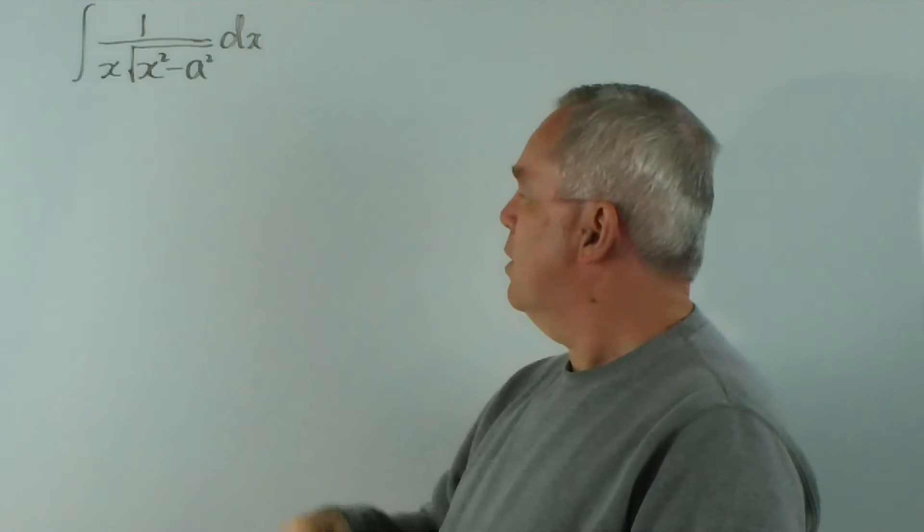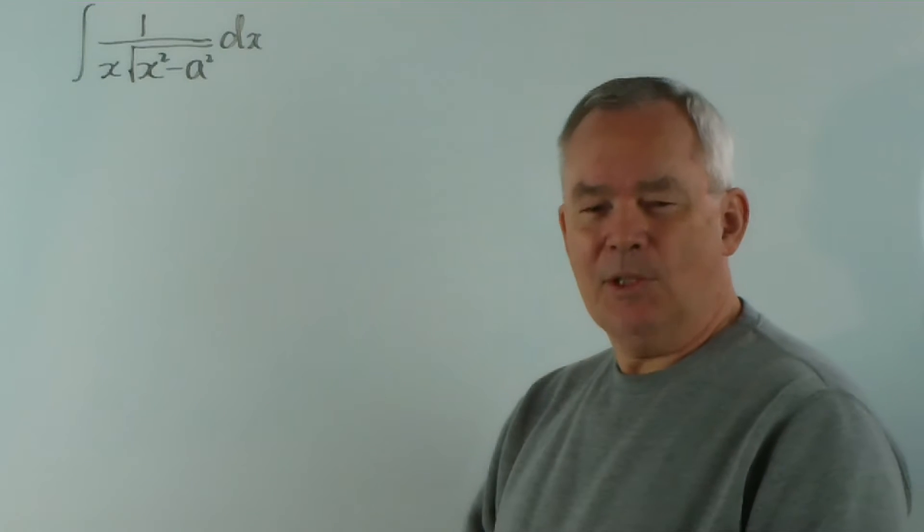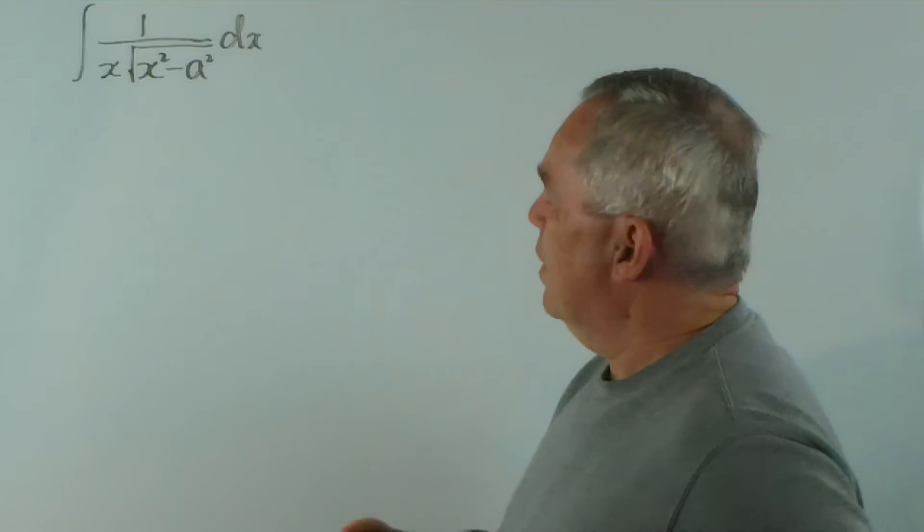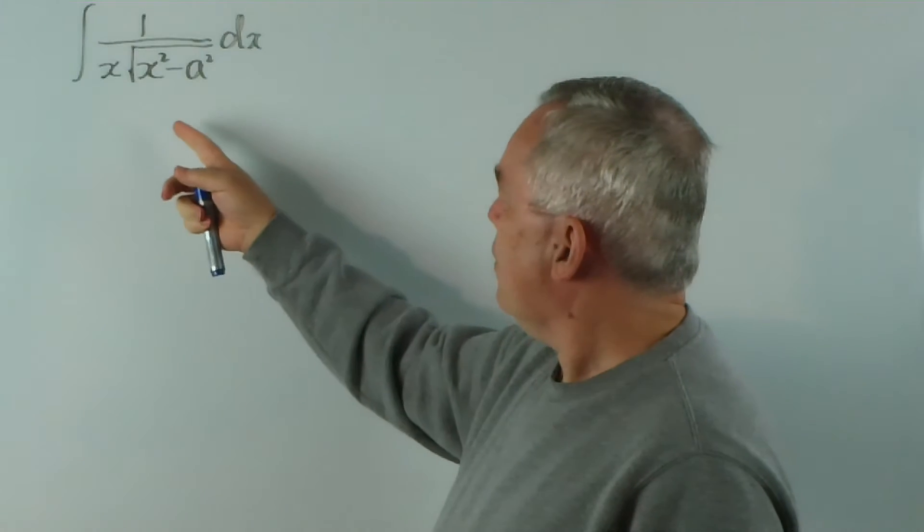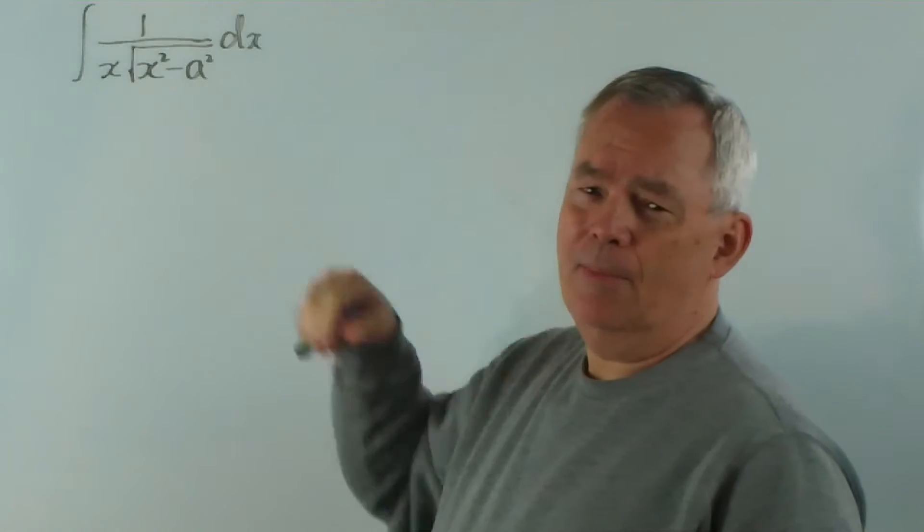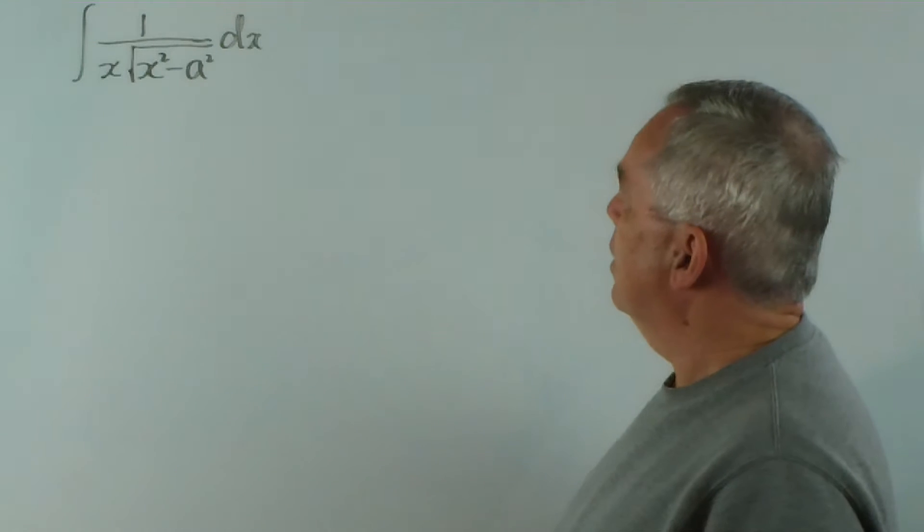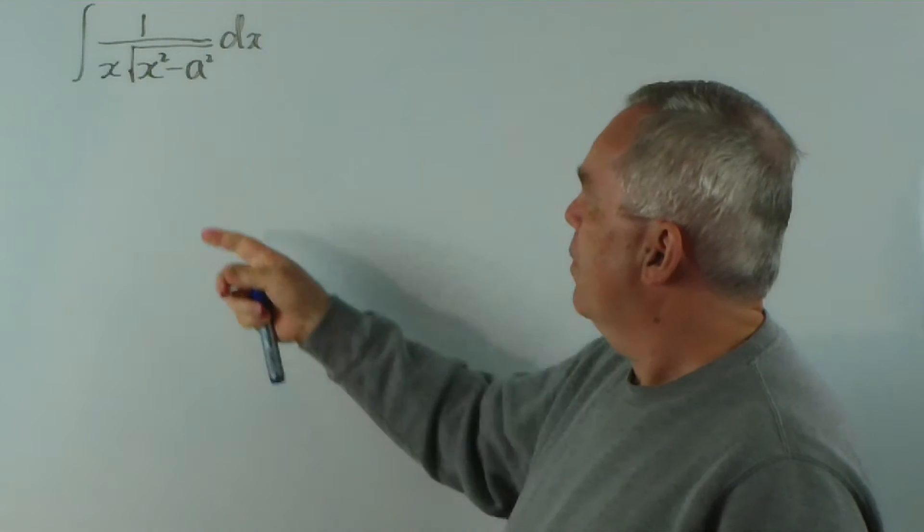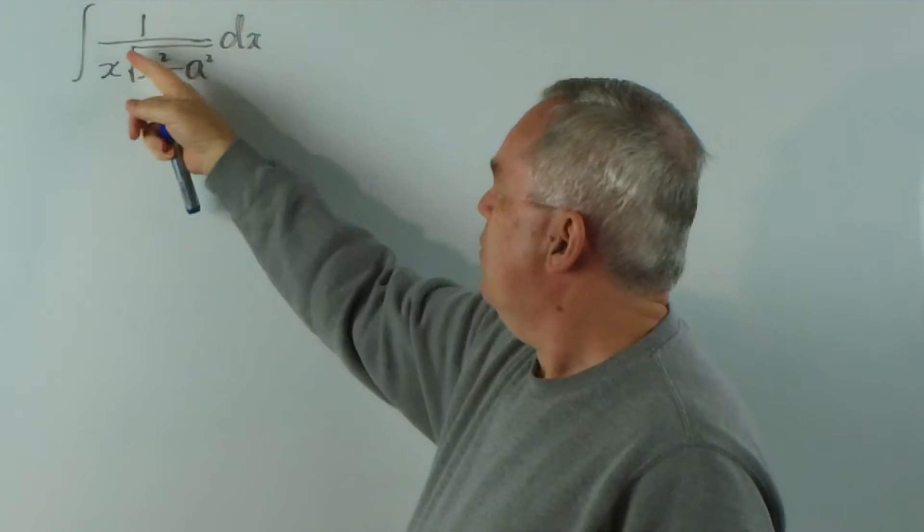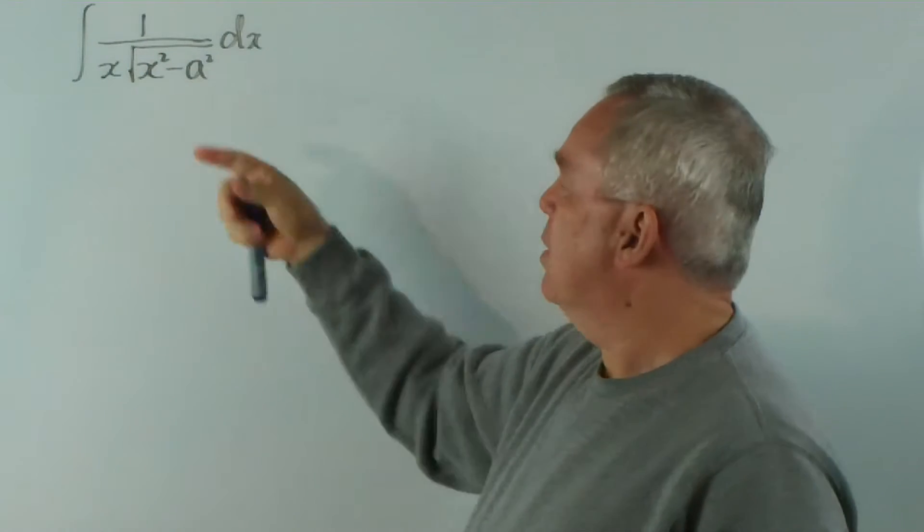But this has quite a pleasant surprise in store for us. In order to get to it, we have to unlock the method for evaluating this integral. And it has to do with this most difficult part, which is the radical in the denominator.